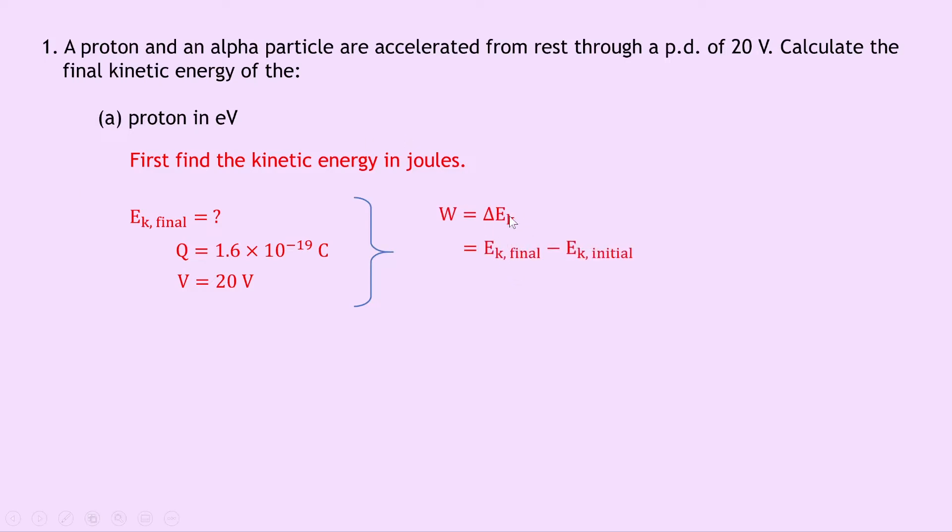We can expand this right hand side to say Ek final minus Ek initial, and remember it's accelerating from rest, so Ek initial is equal to zero. This gives us W equals Ek final, or we can expand the W to be W equals QV, and we can say QV equals Ek final. So if I swap these sides I get Ek final equals Q times V, which is 1.6 times 10 to the minus 19 times the 20. Putting that into your calculator should give you an answer of 3.2 times 10 to the minus 18 joules.